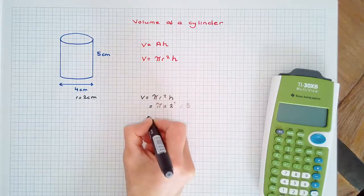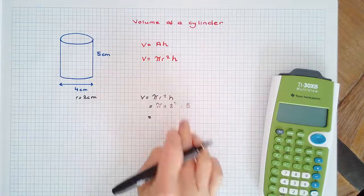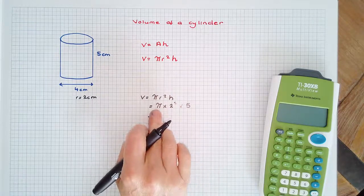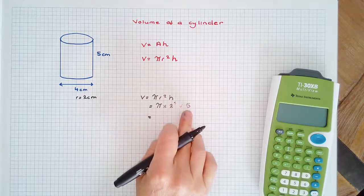On our calculator, we can work out the approximate value. To write the exact value, we leave it in terms of π. That is 4 times 5, which is 20π cm³.